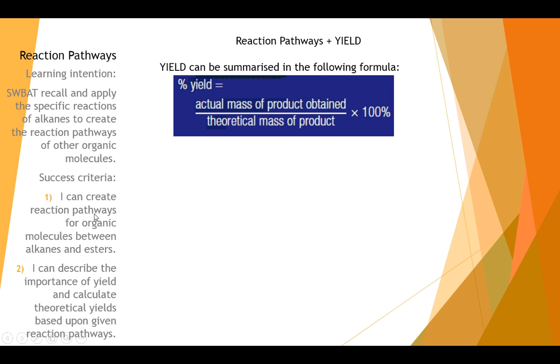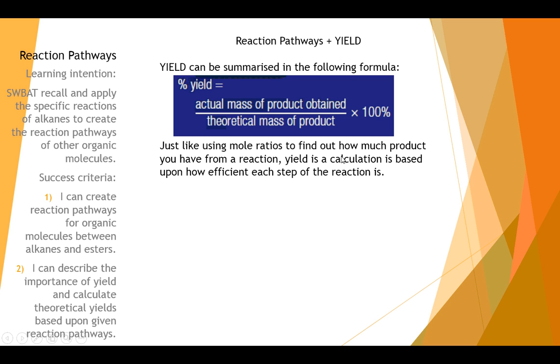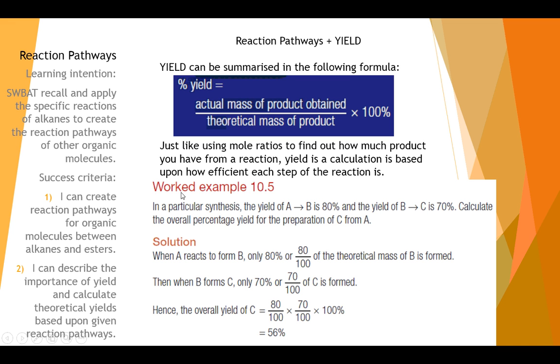Now, that's number one. Can you create reaction pathways for organic molecules? That takes a lot of practice. You need to practice using those flowcharts and remembering how you get from one to the other. How do you get from an alkane to an alkane or an alkane to a haloalkane, et cetera, et cetera. Yield is something that you need to consider as well. But it's a separate calculation. And yield is all about finding out how much product you'll actually make versus how much you thought you would make. So just like using mole ratios to find out the product that you have from a reaction, yield is calculated based upon how efficient each step is in the reaction.